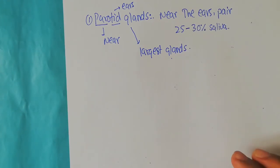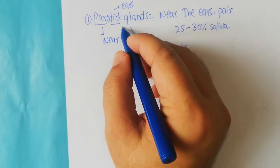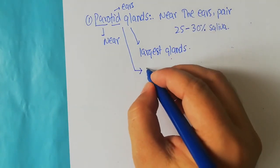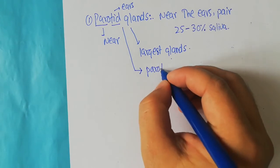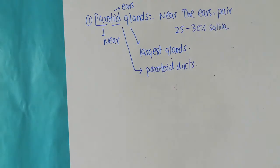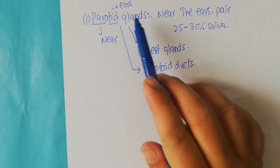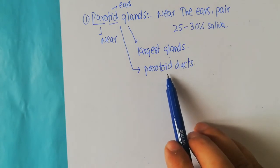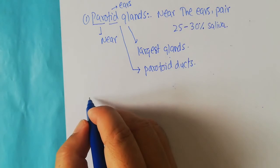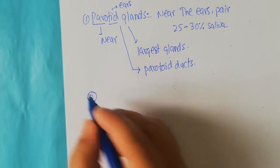The parotid glands release their fluids into the oral cavity utilizing specialized ducts known as the parotid ducts. As the salivary glands are exocrine in nature, they release their secretions through these parotid ducts into the oral cavity to perform their specialized functions.